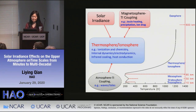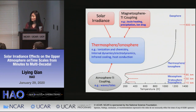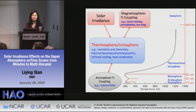This thermosphere-ionosphere system is mostly driven by external forcing, including solar irradiance and the thermosphere-ionosphere coupling with the magnetosphere above and the atmosphere below. Of course, internal processes are also very important, such as internal dynamics and electrodynamics. Today I will talk about the solar irradiance effect on this thermosphere and ionosphere system.